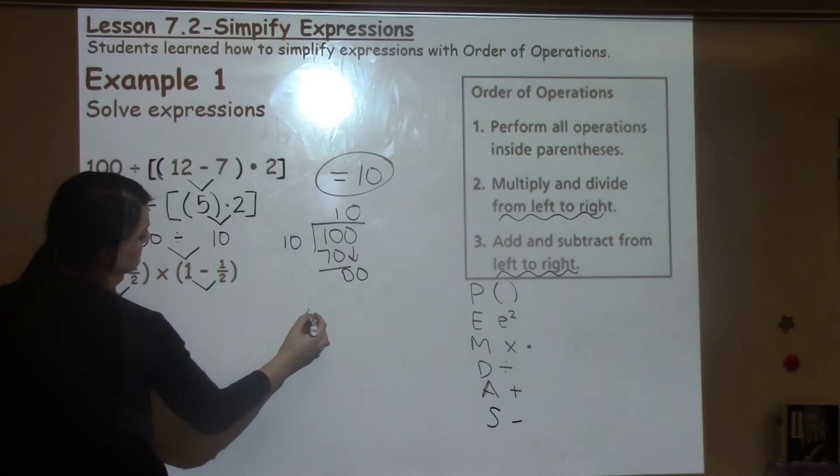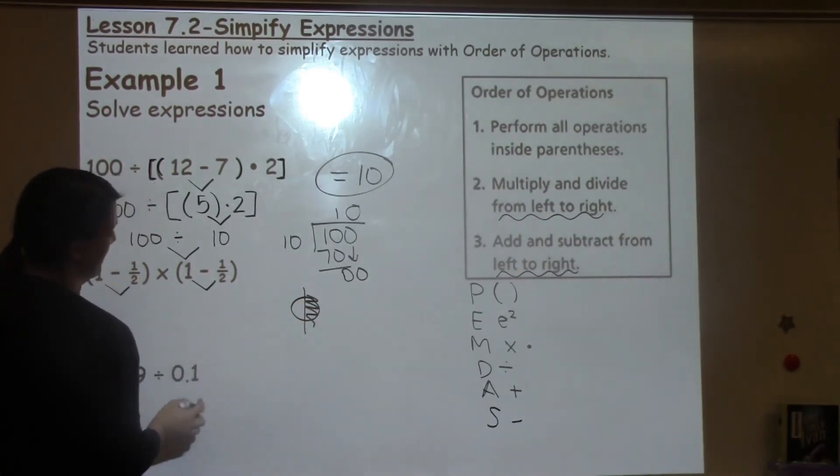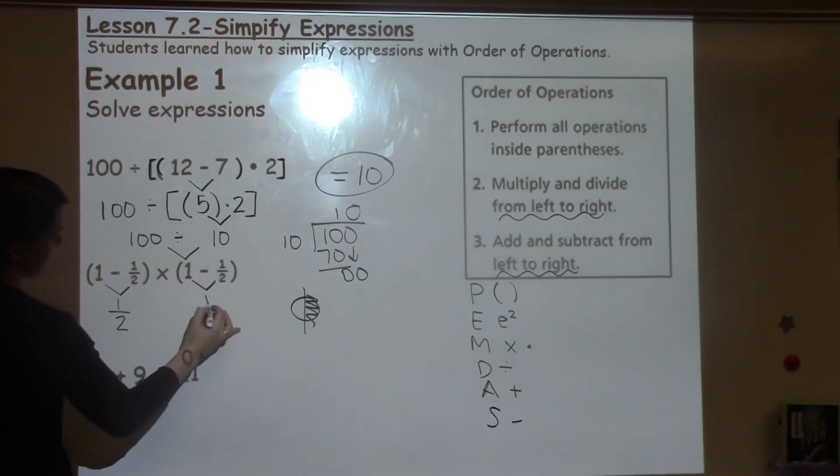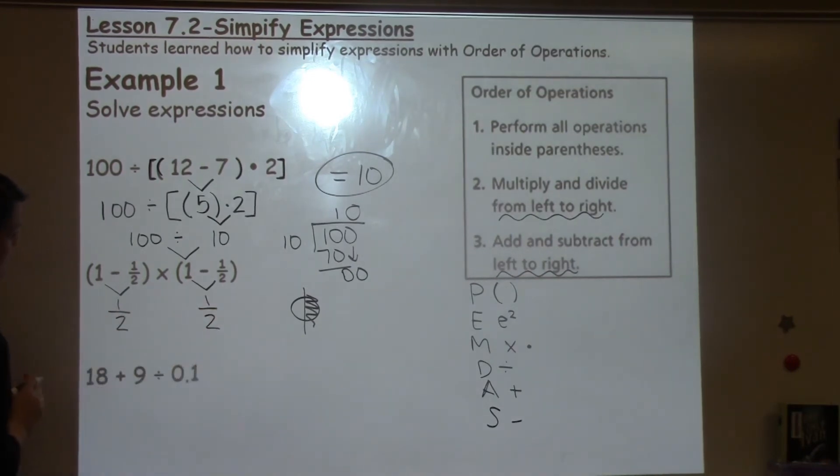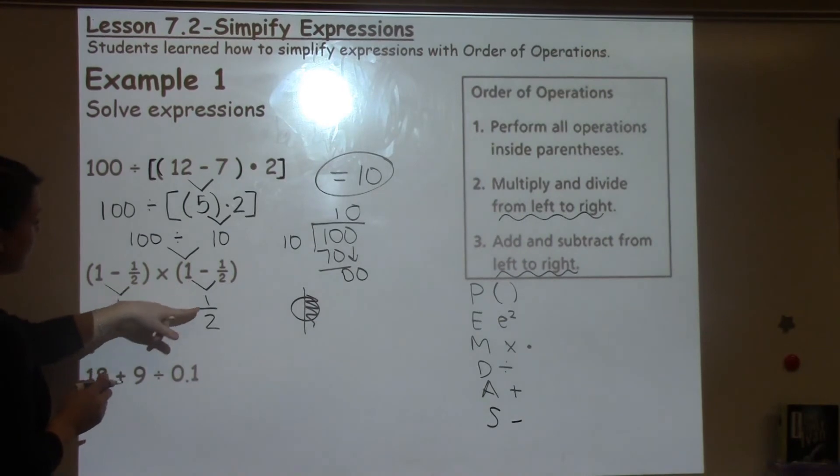So I know that 1 minus 1 half, if I have one whole and I take away 1 half, I'm left with 1 half. So on both of these problems because they're the exact same, I have 1 half and 1 half.